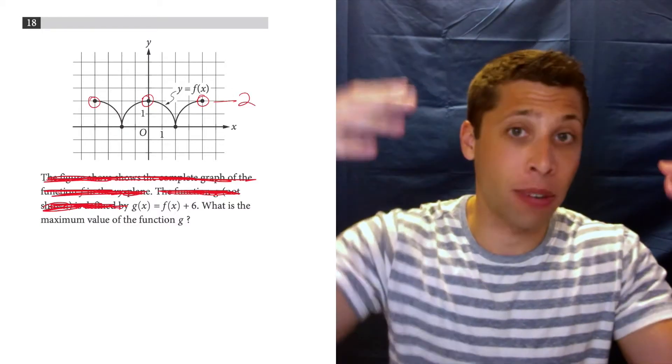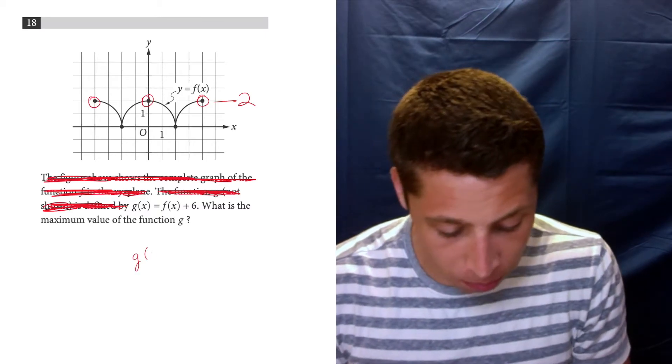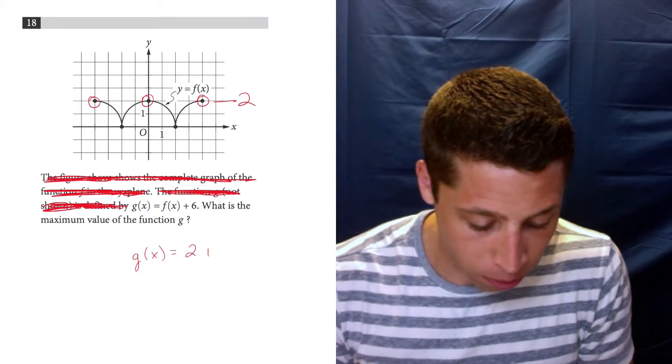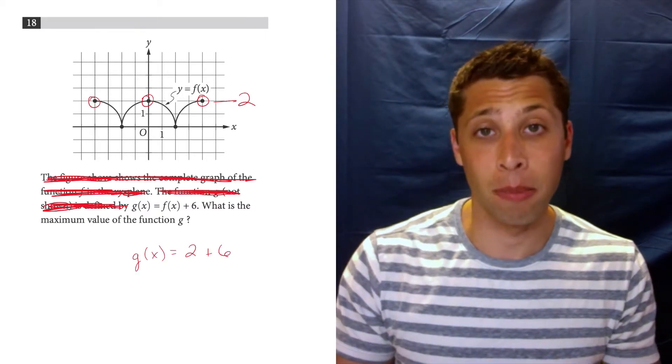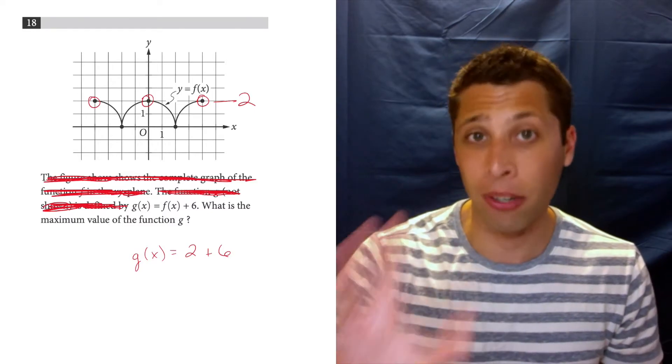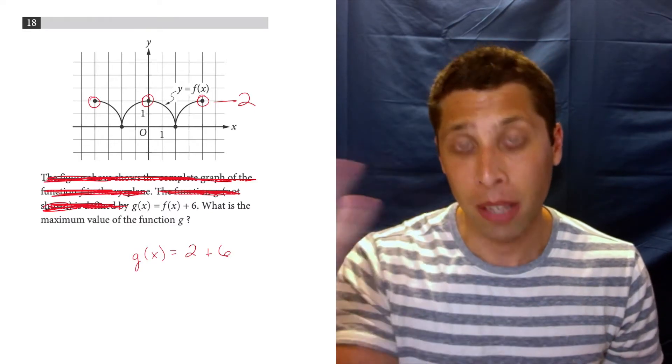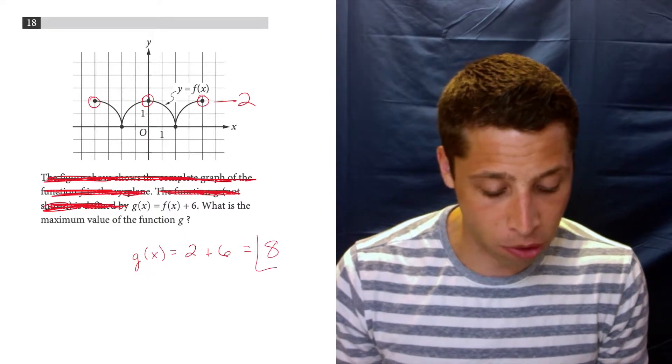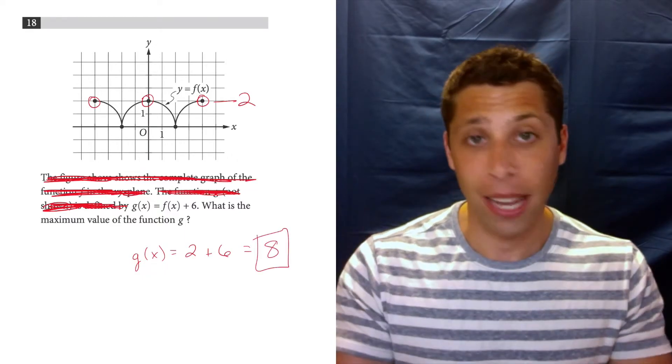So if that's the maximum for f, then the maximum for g is going to be 2 plus the 6 because that's what g is. Take whatever you have for f and add 6 to it. And so in that case, the maximum for g is 8. And that's the answer.